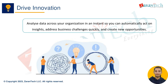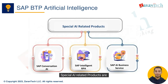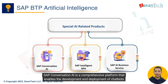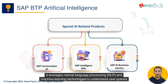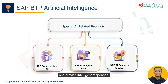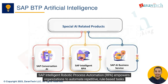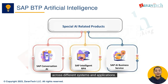Special AI-related products include: SAP Conversational AI, a comprehensive platform that enables the development and deployment of chatbots and virtual assistants. It leverages natural language processing (NLP) and machine learning to understand user queries and provide intelligent responses. SAP Intelligent Robotic Process Automation (RPA) empowers organizations to automate repetitive, rule-based tasks across different systems and applications using software bots.